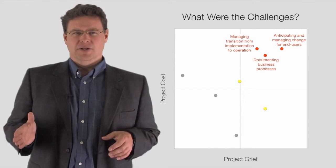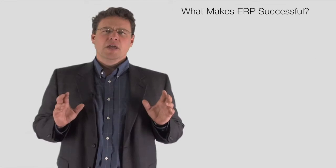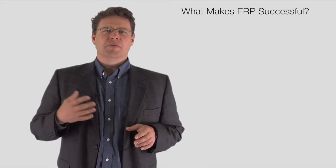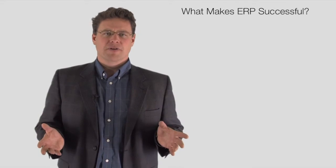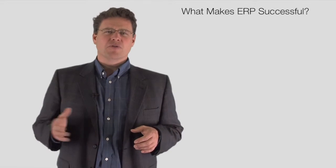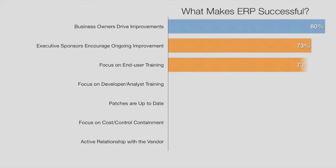There's still one thing we can add to this overall model, however. Here we explore what happens when the implementation is done and we shift back to overall operation of the ERP environment. After accounting for a variety of factors, we see that the most important consideration is that business owners can drive ongoing improvements. Other important issues, not surprisingly, include executive sponsorship and, again, end-user training.